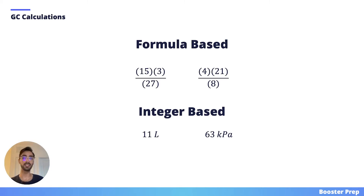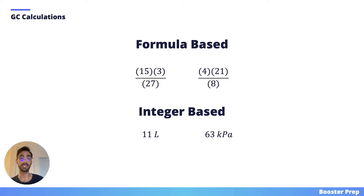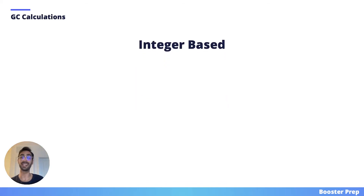Instead, they'll give you a value like 12 or 15.5. You can easily do basic calculations with these values and you certainly should be comfortable doing so. But you can also use simple rounding techniques to make yourself even more efficient if you come across some calculations that are harder to do. So let's go through an example.